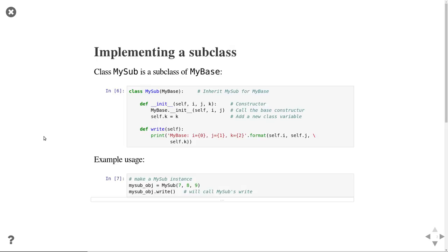When we instantiate mySub, we pass three integers. Calling the write method now gives us three numbers — i, j, and k — confirming we're calling the subclass's overloaded write function. By inheriting, we gained all the functionality of the base class and were able to extend it.